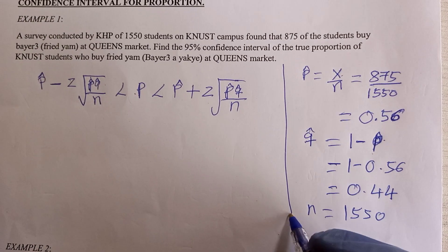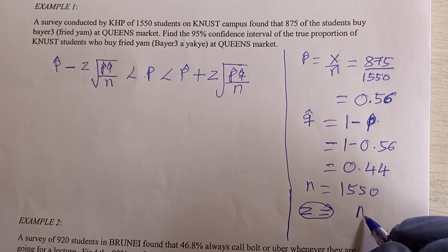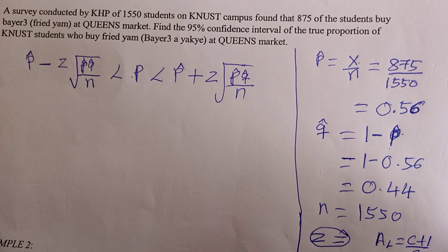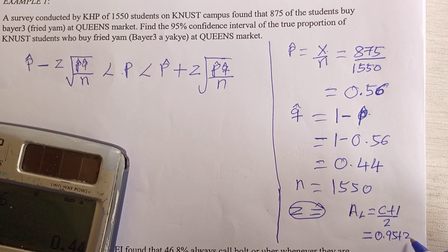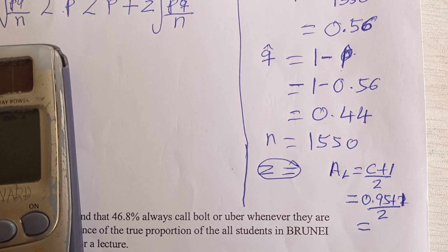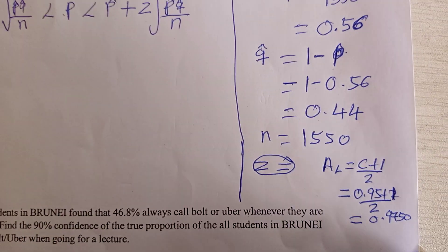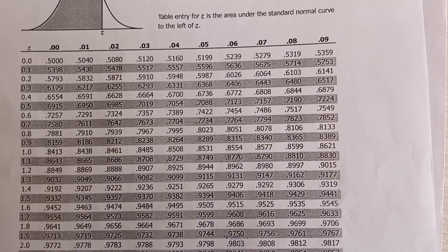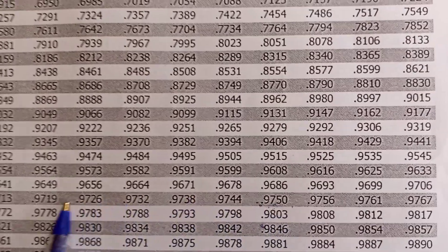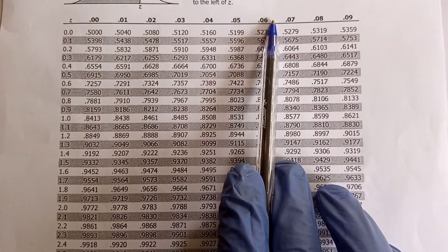Now you also need to find your z-score. To find z, you find the area to the left, which is c plus 1 divided by 2. With a confidence of 0.95, that gives 0.95 plus 1 divided by 2 equals 0.9750. You look up 0.9750 in the z-table, and when you trace it, you get 1.96. So your z equals 1.96.